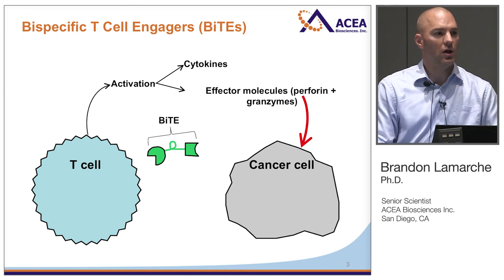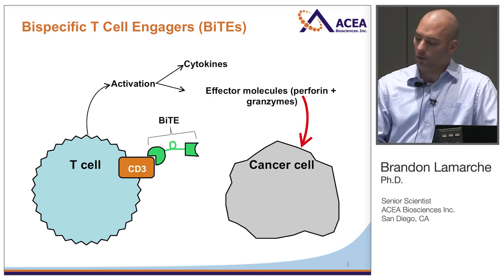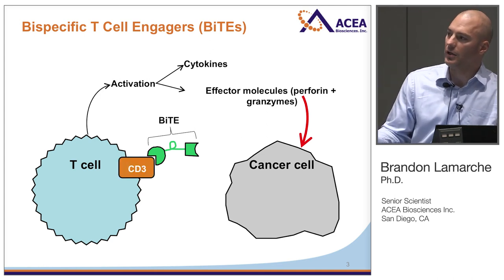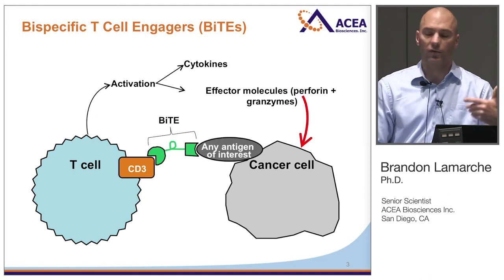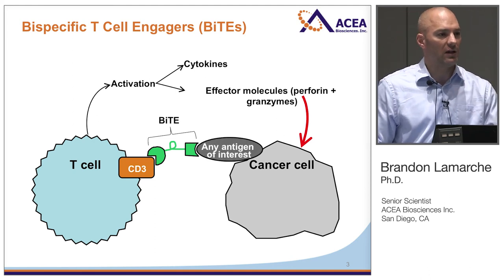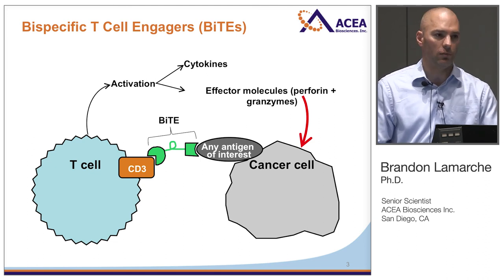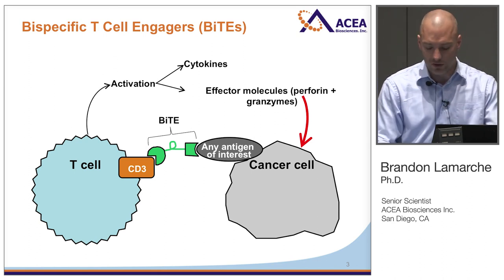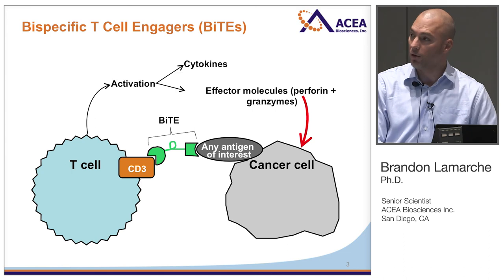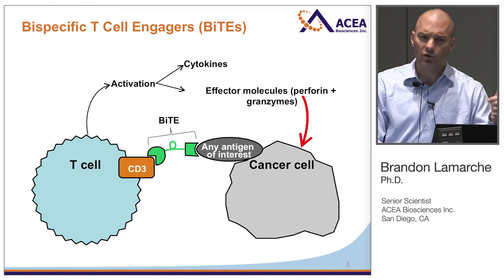These are bifunctional molecules — each half is a single-chain antibody. One half has been designed to bind to the CD3 co-receptor on the T cell, and the other side can be engineered to bind to any antigen of interest. For example, if you're targeting breast cancer cells, you could engineer this single-chain antibody to bind the HER2 protein, and by tethering these two cells in close proximity, you stimulate T cell proliferation and induce apoptosis in the cancer cell.